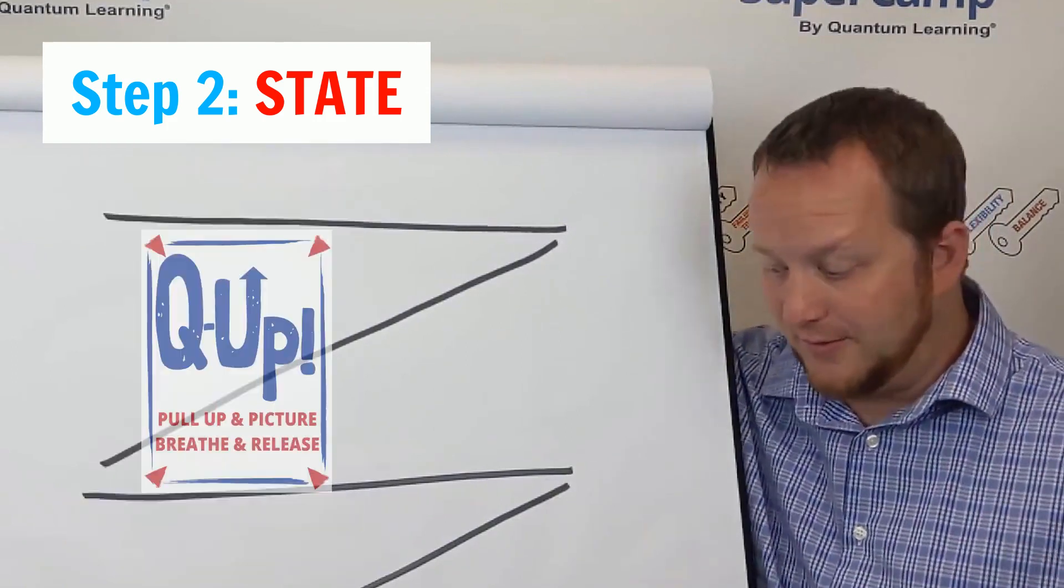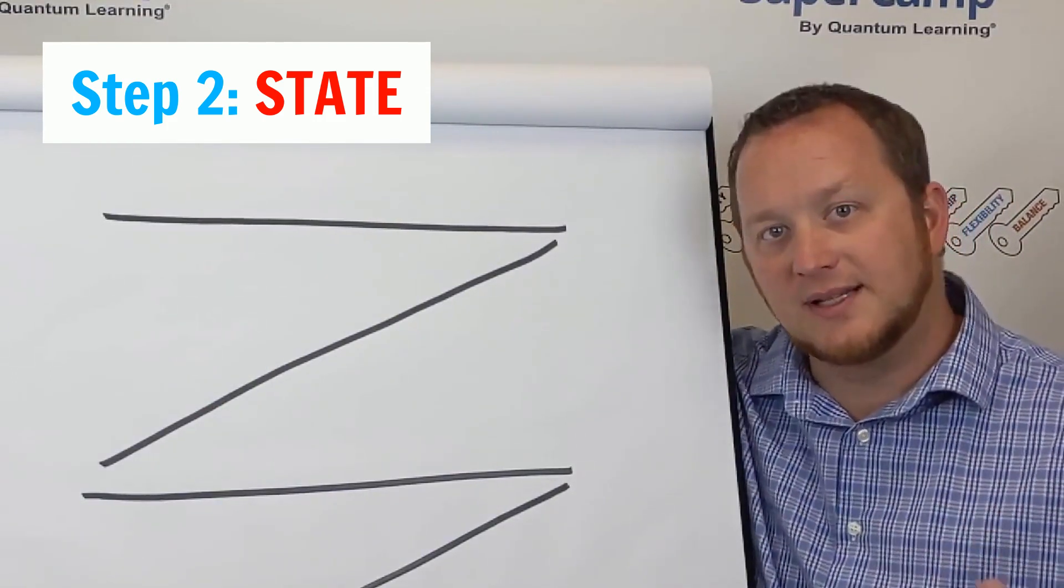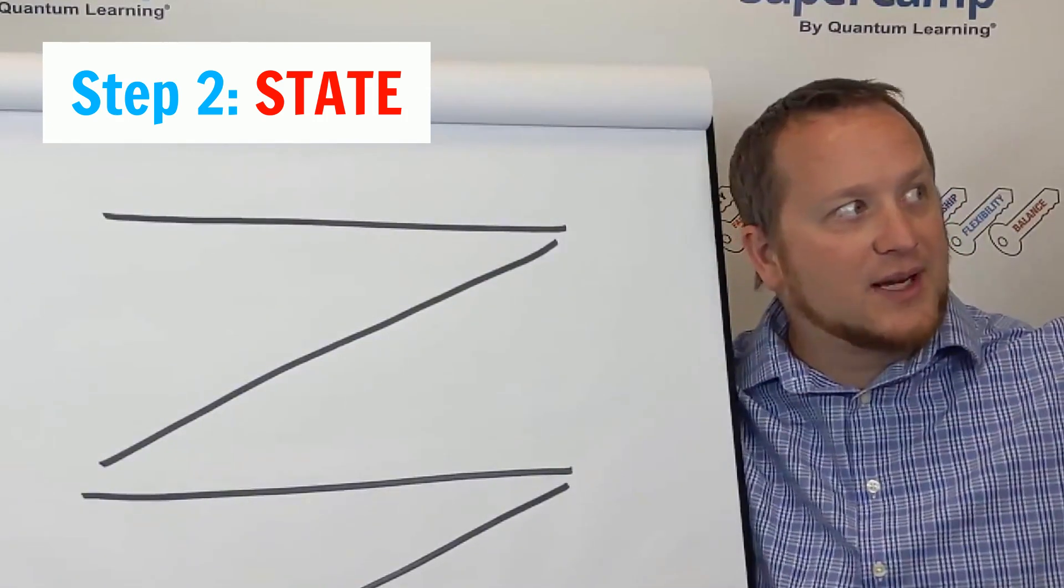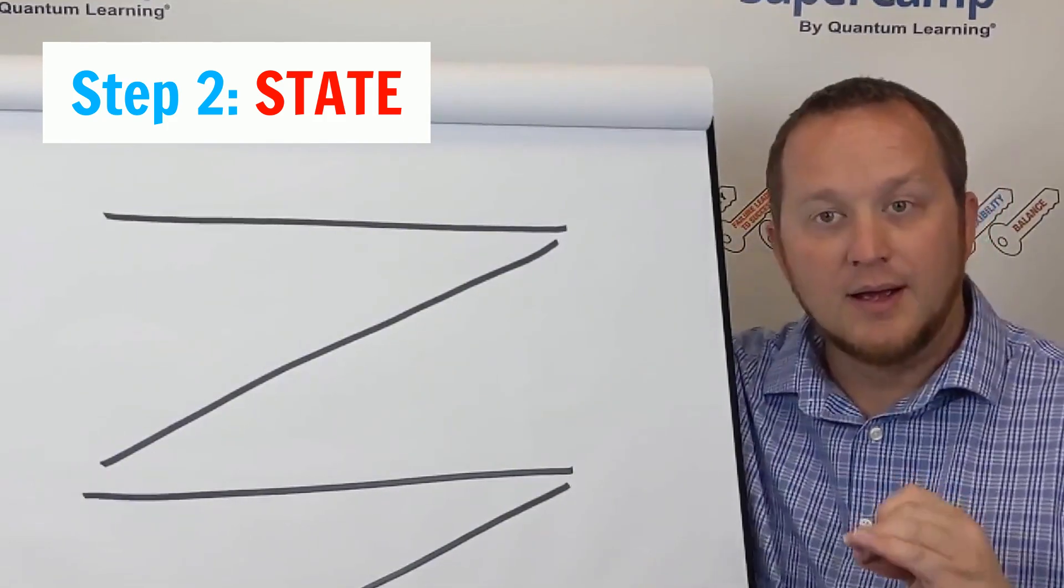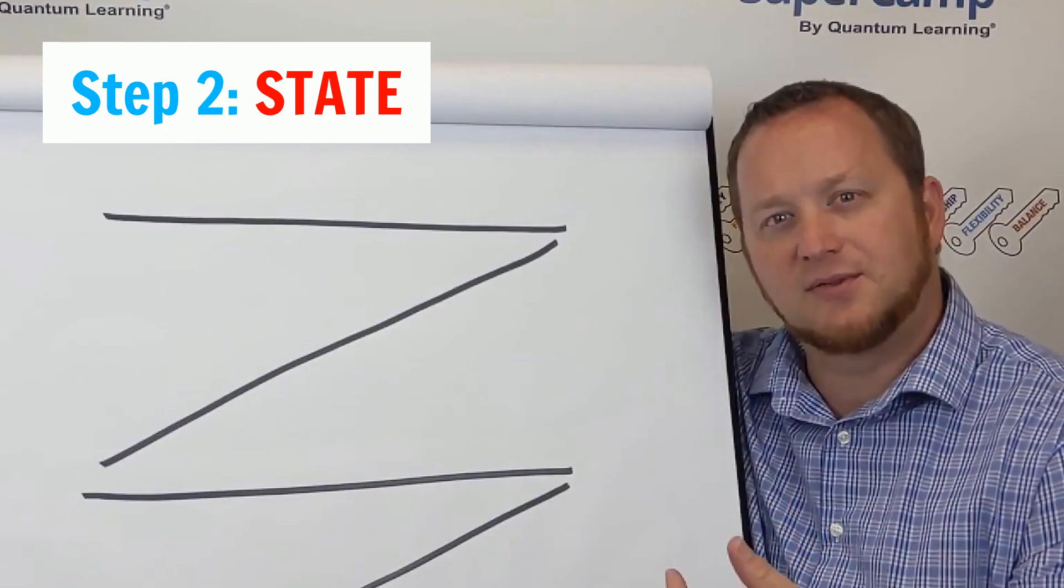And by doing that over and over, when I'm reading the book that I have, I found that it became easier to focus in and comprehend. So the second I lost track of what I was reading, pull up a picture, breathe and release, go. The more I did that, I started to realize that I could stay focused for longer.